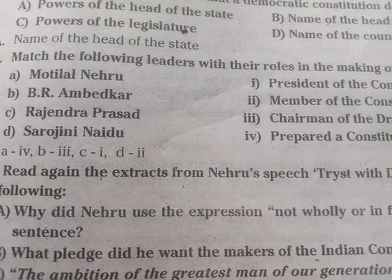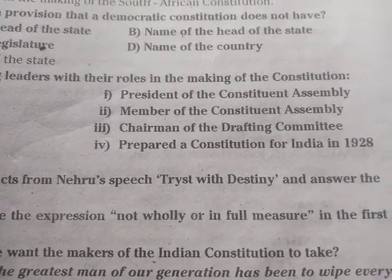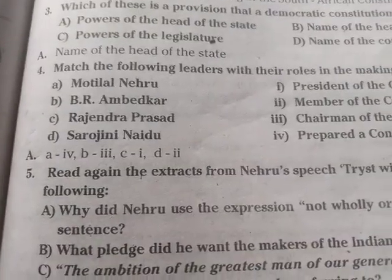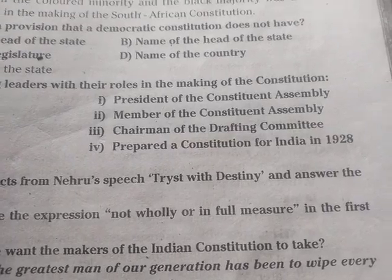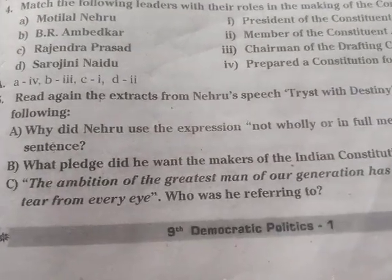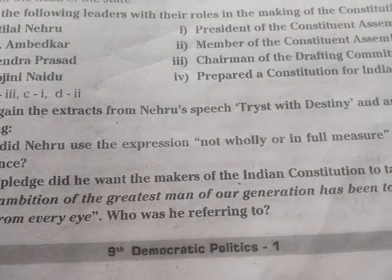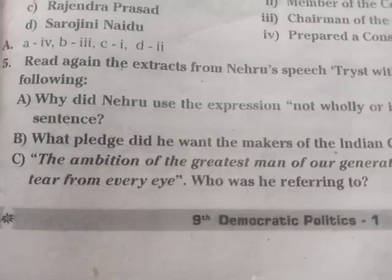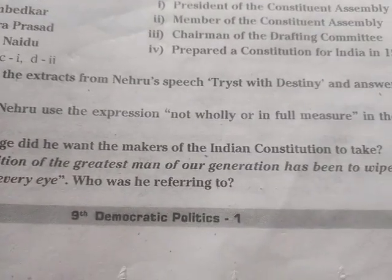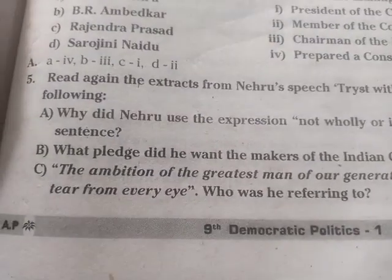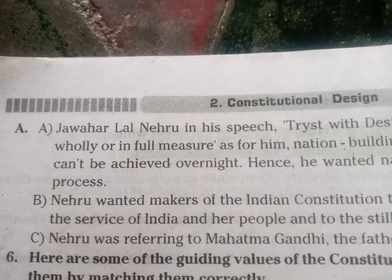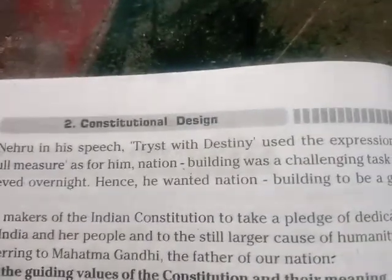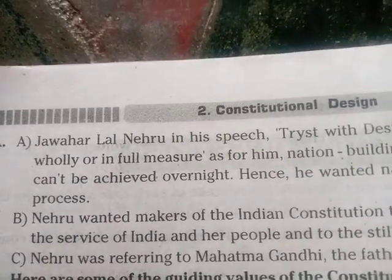Question 5: Read again the extract from Nehru's speech 'Tryst with Destiny' and answer the following. A. Why did Nehru use the expression 'not wholly or in full measure' in the first sentence? B. What pledge did he want the makers of the Indian constitution to take? Answer A: Jawaharlal Nehru in his speech 'Tryst with Destiny' used the expression 'not wholly or in full measure' because for him, nation building was a challenging task which cannot be achieved overnight.